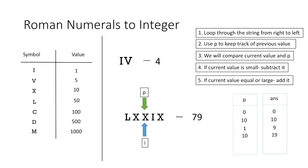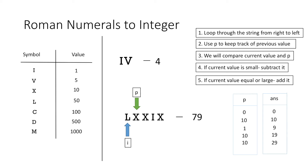We again update the value of p to 10 and move on to the next symbol, which is again X with value 10. Comparing it with p, the value is equal, so we add it to our answer and our answer becomes 29. We update p to 10 again, and finally we move on to the last symbol L, which has the value 50, greater than p, so we add it to our answer and our answer becomes 79, which corresponds to the integer value of this roman numeral.